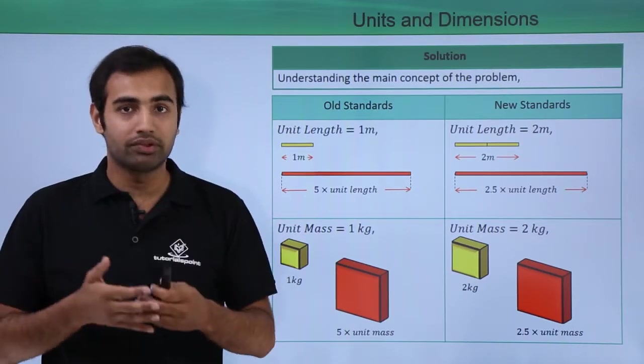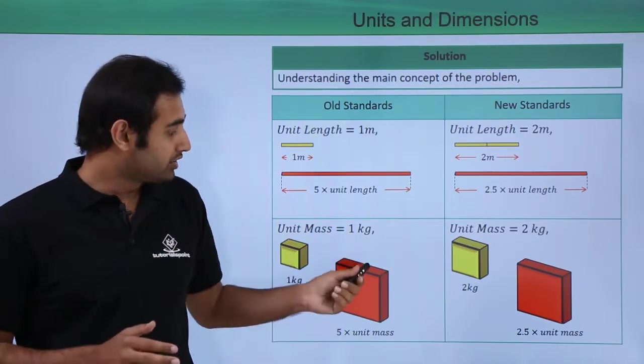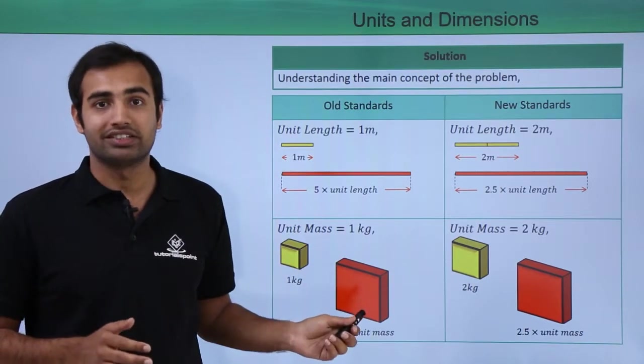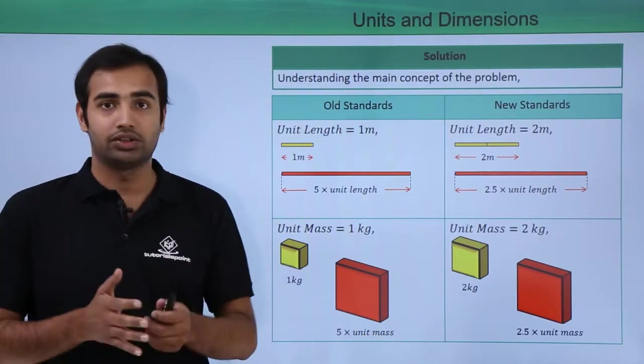Similarly, taking the example of mass as well, if I have this yellow block of 1 kg as my original standards, this block of 5 kg essentially can be said as 5 times the unit mass, which is 5 times the mass of this yellow block.